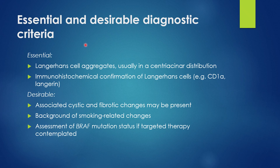According to the WHO classification, essential diagnostic criteria include Langerhans cell aggregates, usually in centrilobular distribution, with IHC positivity for CD1a and Langerin. Desirable criteria include associated cystic and fibrotic changes, background of smoking-related changes, and BRAF mutation.